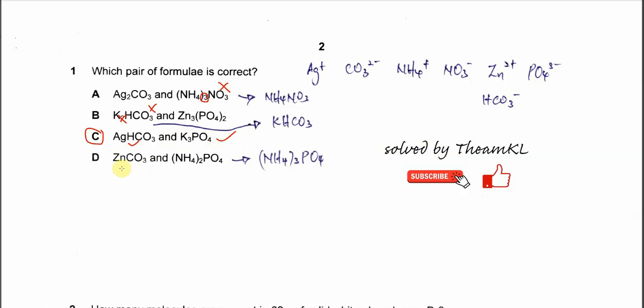For the last one, zinc carbonate is correct—this is two positive and two negative, so we get ZnCO3. This one is wrong because phosphate is three negative, so this should be three, not two. Therefore, the answer is C. That's all, thank you.